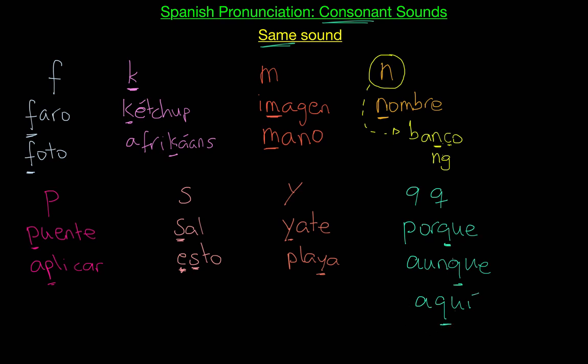Now, this Q in Spanish, you will only find it, or Qs you will always find them followed by a U. You'll find in Spanish Q-U-E or Q-U-I. These are basically the only two combinations you will find them in. And in both cases, this U is silent. This U is silent. So we don't say AQUI, we say AQUÍ. We don't say AUNQUE, we say AUNQUE. We don't say POR QUE, we say PORQUE. So this U here is silent. We don't hear it. PORQUE.